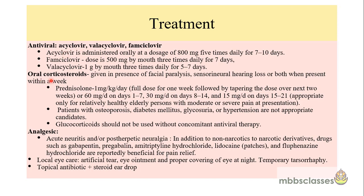Oral corticosteroids should always be added in the presence of facial paralysis, sensorineural hearing loss, or both, and should be started within a week. Corticosteroid therapy helps in reduction of post-herpetic neuralgia. The corticosteroid given is oral prednisolone at 1 mg per kg per day — full dose for 1 week followed by tapering over the next 2 weeks. Approximately: 60 mg per day for days 1-7, then 30 mg per day from days 8-14, then 15 mg from days 15-21.